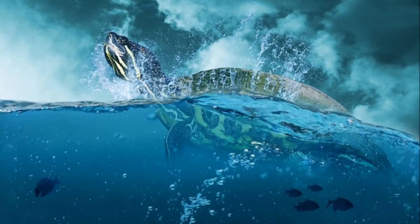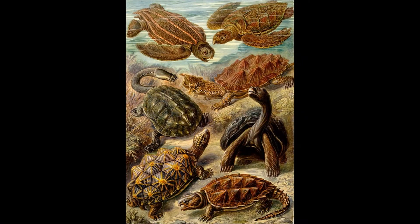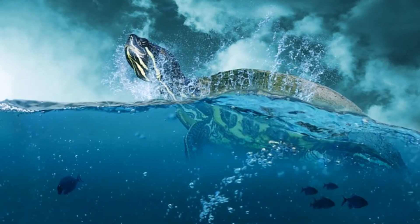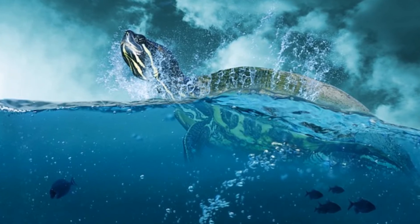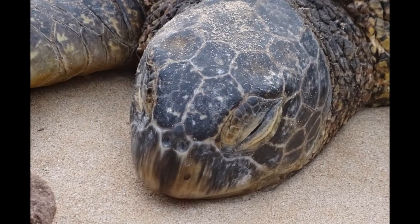There are seven different species of sea turtles: Green, Hawksbill, Kemp's Ridley, Leatherback, Loggerhead, and the Olive Ridley can be found throughout the ocean. The seventh species, the Flatback, is found only in Australia. All species are listed on the IUCN Red List of Endangered Species as either Endangered or Critically Endangered.